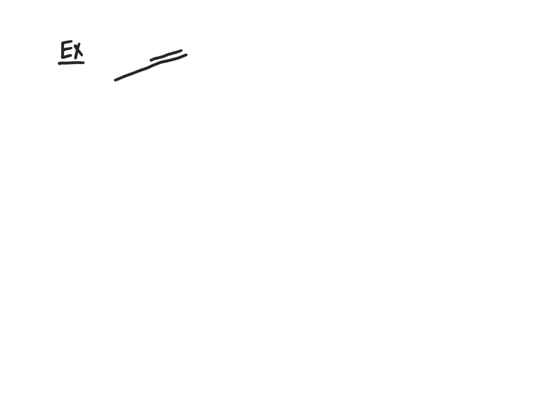We'll start with the same example from the intro, where we take 1-propyne, or prop-1-yne, and react it with our mixture of water and acid. The common acid here is sulfuric acid, H₂SO₄, which serves as a catalyst, as does mercury(2+), Hg²⁺. So the acid and the mercury are going to act to catalyze the reaction.